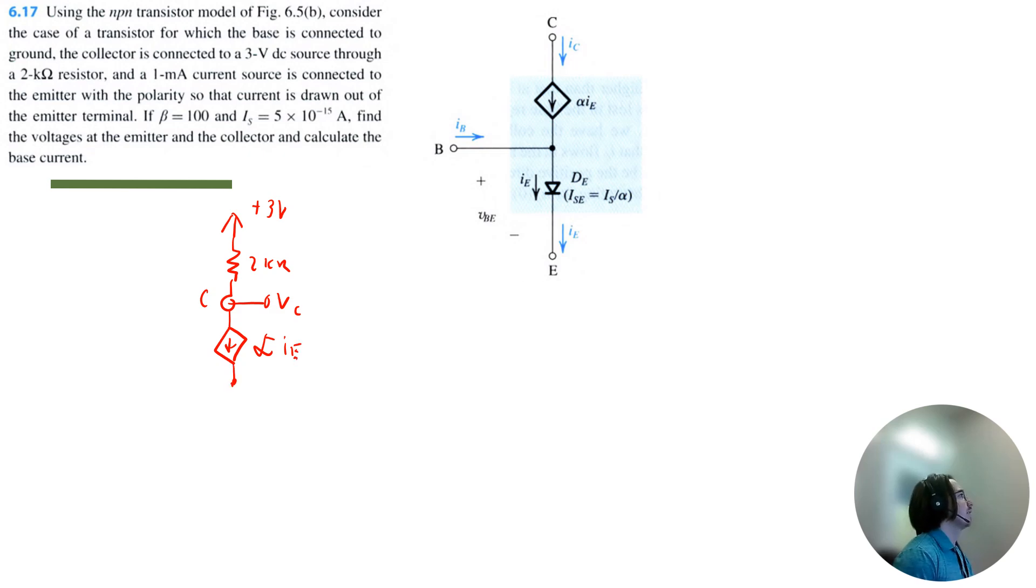Then the base is just connected to ground. So we have the base terminal, base current, and we are just connected to ground.